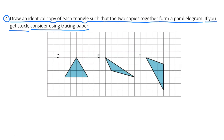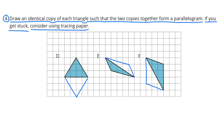Number 4: Draw an identical copy of each triangle such that the two copies together form a parallelogram. If you get stuck, consider using tracing paper. I've drawn identical copies of each triangle and joined them together to form parallelograms.